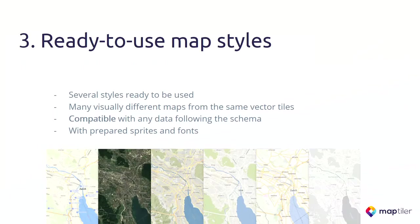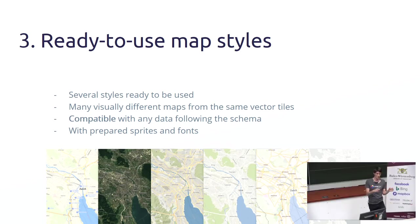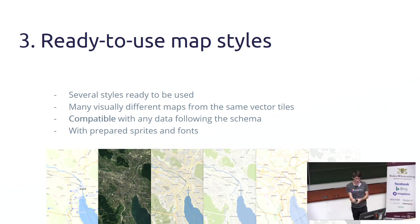Now you have the tiles. The last step — how to transform those tiles into real maps — is to apply some kind of style. There are several of them, also available on GitHub, so you can use them for maps generated from OpenStreetMap. But you can also use them for your own data, in case you stay compatible with the schema. For instance, you can say: take everything from OpenStreetMap except roads, because I have my own road data. If you follow the schema, you can get exactly the same output.